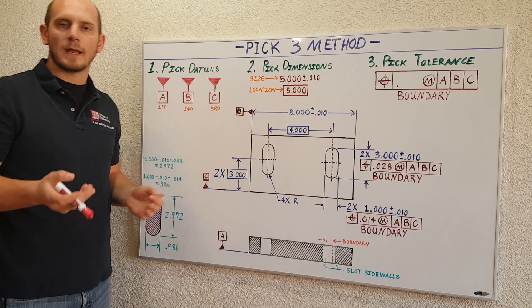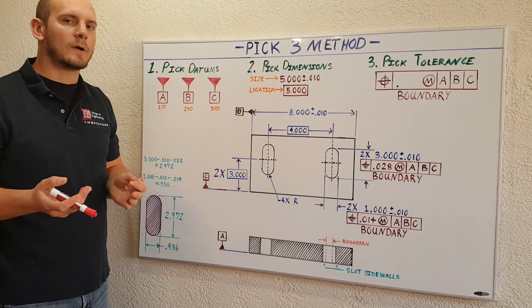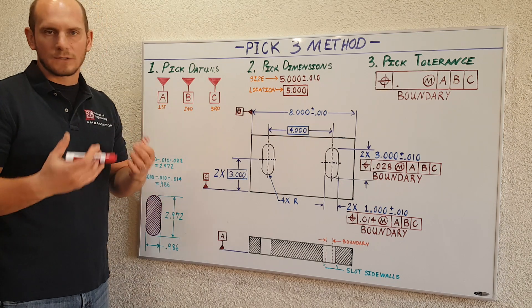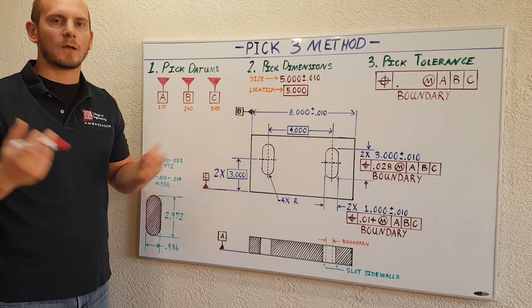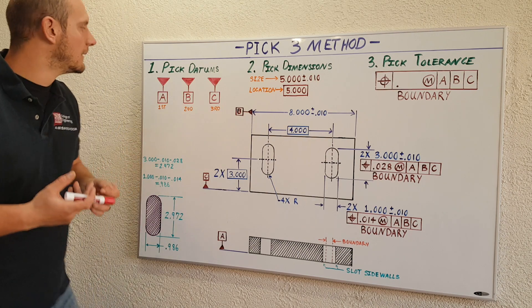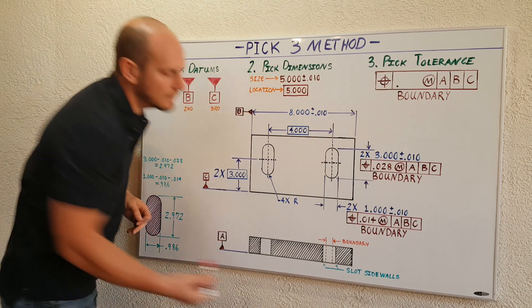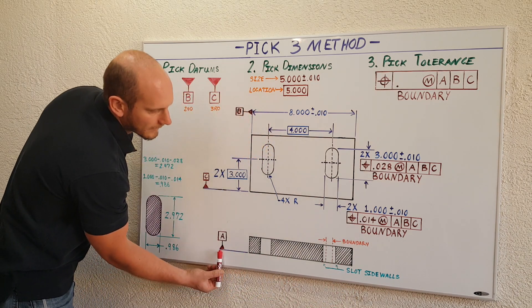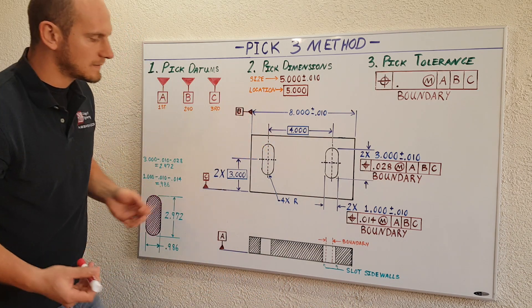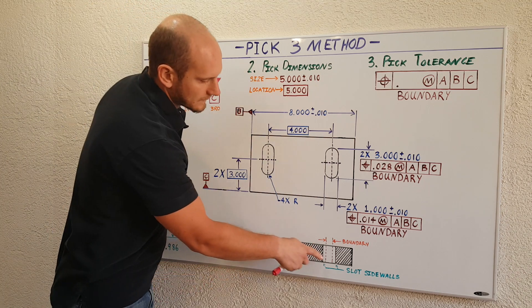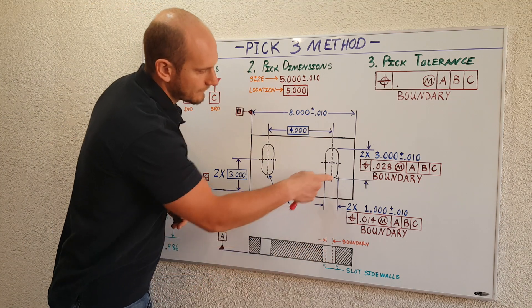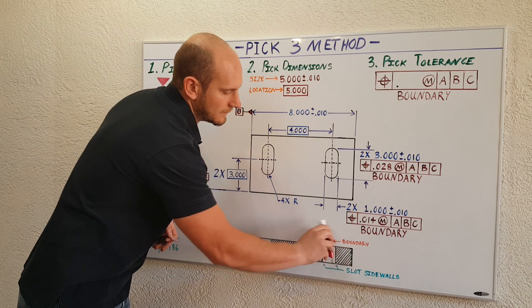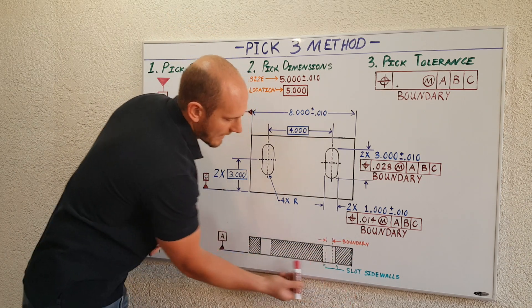Number one: pick your datums. Your datums are your starting point that you specify to the machinist. They should start at these features or surfaces and then move outwards to begin locating the slotted features. For our first datum A, I chose the bottom flat surface of the plate right here. By doing this, I'm telling the machinist that I want the slot side walls all the way around the slot to be perpendicular to that bottom flat surface.